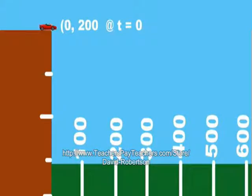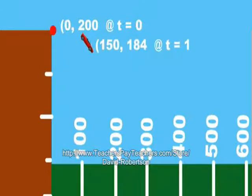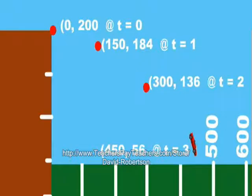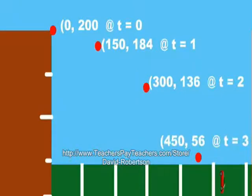You can see the Ferrari is at, on the graph, the (0, 200) at zero seconds. Horizontally, it was 150 feet across and 180 feet up at one second, 300 feet across and 136 feet in the air at two seconds, and 450 feet across and 56 feet in the air at three seconds before it landed on the ground.